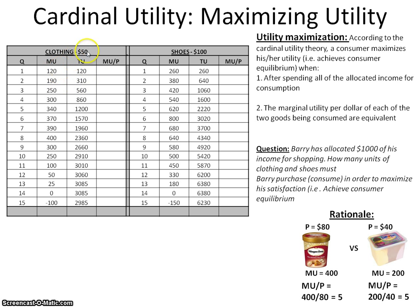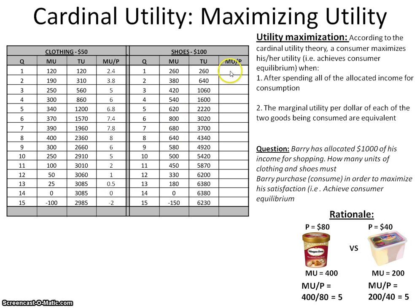For clothing, it's going to be 120 ÷ 50, 190 ÷ 50, 250 ÷ 50, and so forth, giving values of 2.4, 3.8, and other values for MU over P. For shoes, it's going to be 260 ÷ 100, 380 ÷ 100, and so forth, giving values of 2.6, 3.8, 4.2, 5.4, and so forth. We now have our MU over P column filled out for both products.